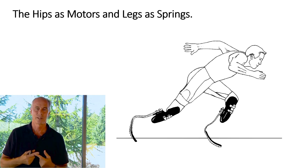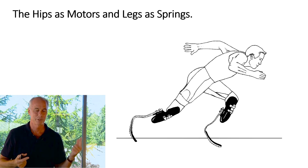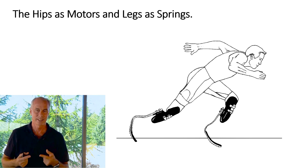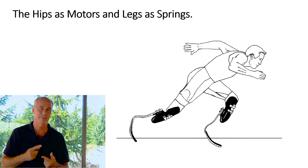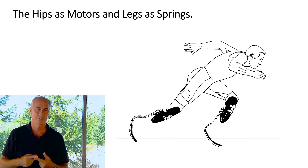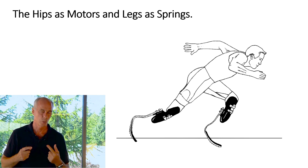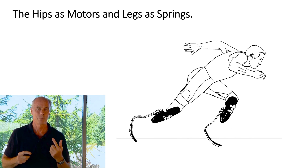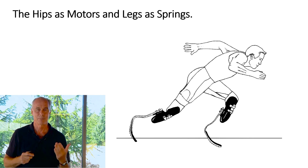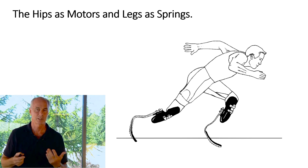If there's one thing learned from the evolution of bipedality, it was getting farther on fewer calories — that's what makes us efficient. Basically, the hips act as motors and the legs act as springs.